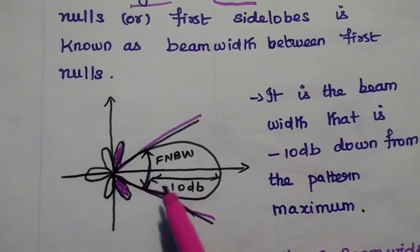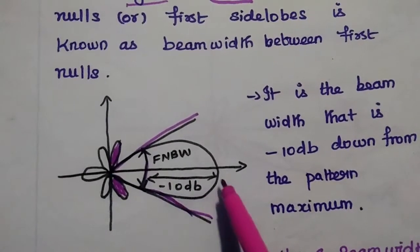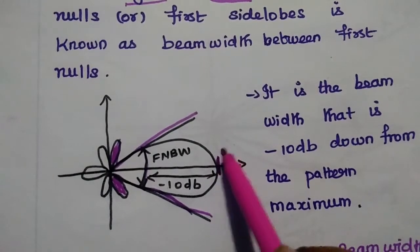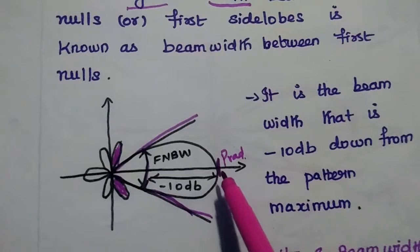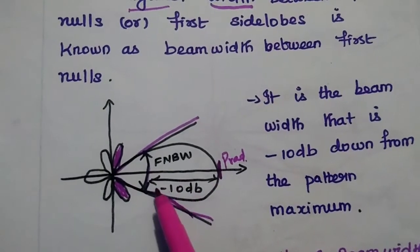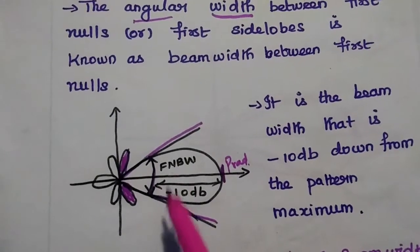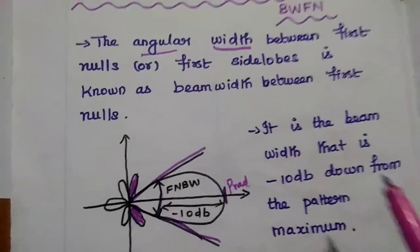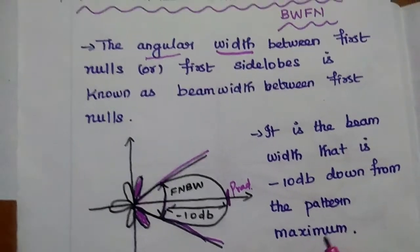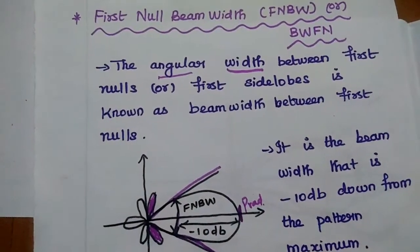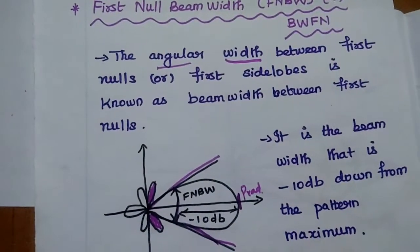The maximum value at the first null point may be around minus 10 dB from the maximum radiated power. So the first null beam width is measured at minus 10 dB down from the pattern maxima. It is very simple to find the first null beam width from the radiation pattern.